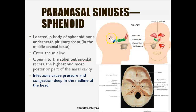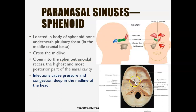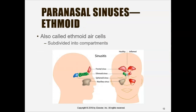Here's the sphenoid sinus. Notice how much further and deeper it is in the head — you can see it here in the skull. The frontal bone is at the front, the occipital bone is at the back, and the sphenoid sinus is located further down inside your skull. If you get an infection or mucus buildup there, you'll feel congestion deep in the midline of your head.